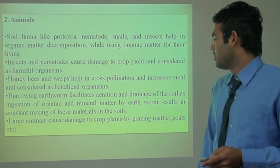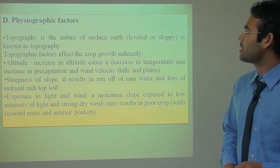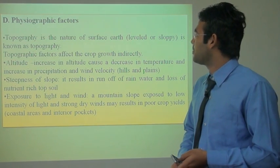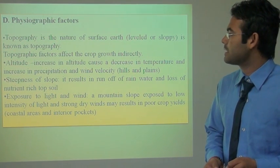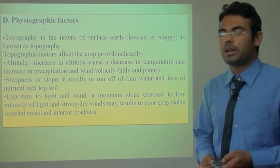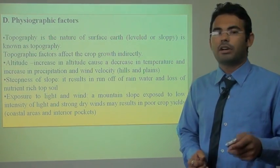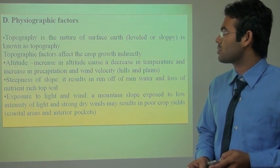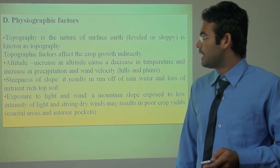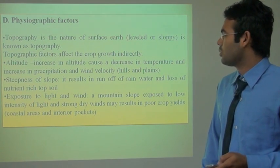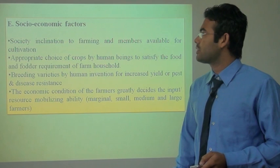Large animals cause damage to crops and plants by grazing. The fourth external factor is the physiographic factor. Topography refers to the natural features of the Earth's surface. Topography affects crops indirectly through altitude — an increase in altitude causes a decrease in temperature and an increase in precipitation and wind velocity in hills and plains. The steepness of slope results in runoff of rainwater and loss of nutrient-rich topsoil. The exposure to light and wind on mountain slopes results in low light intensity, and strong dry winds may result in poor crop yield.